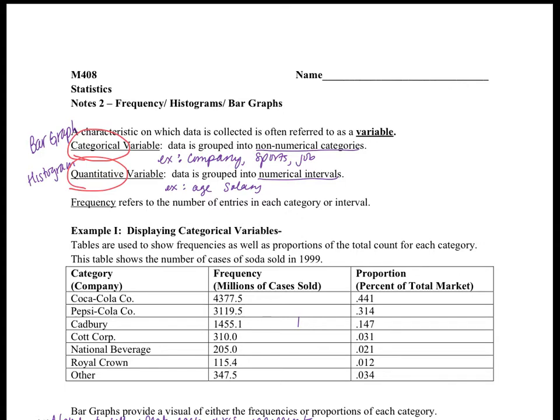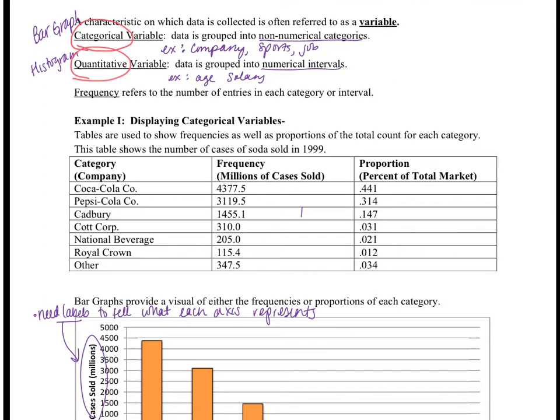A frequency chart refers to the number of entries in each category or interval. The term frequency refers to how many times entries appear in each category or interval.